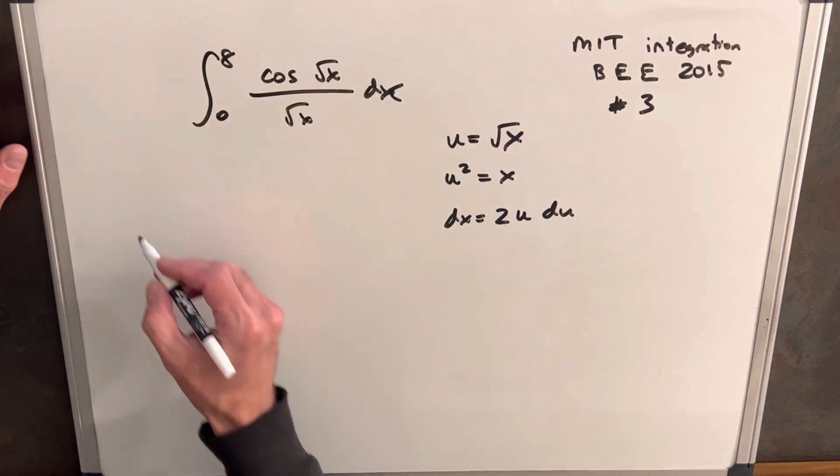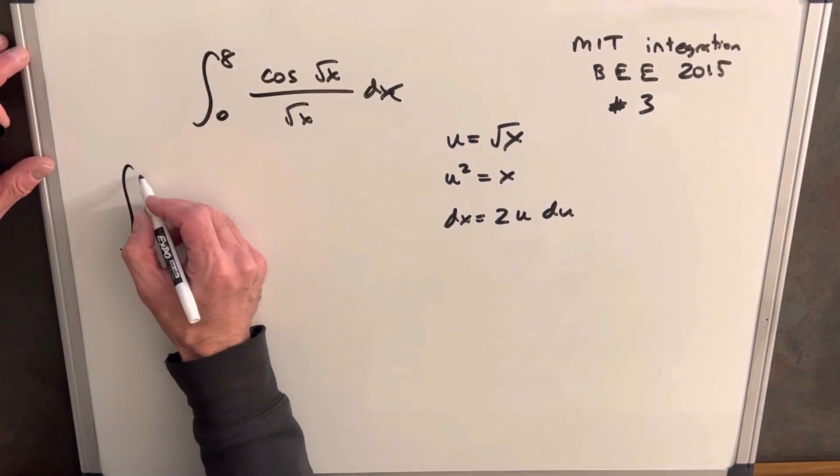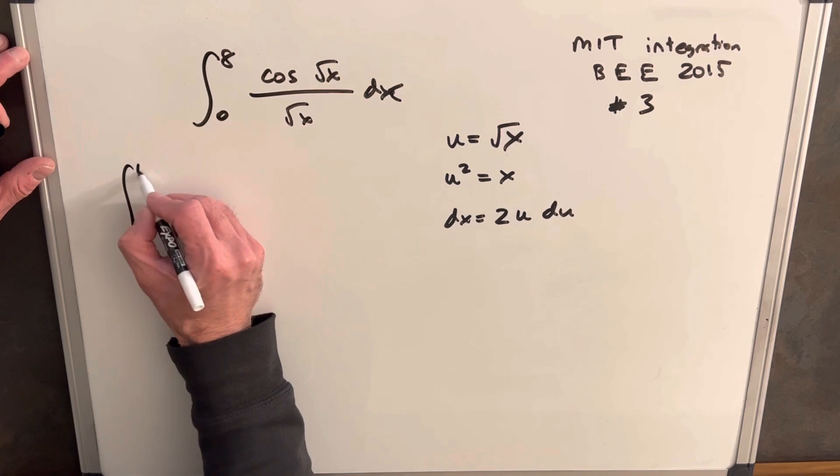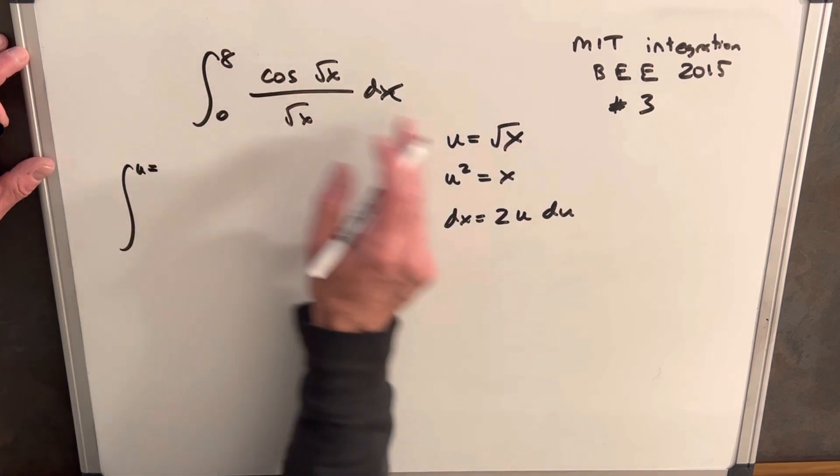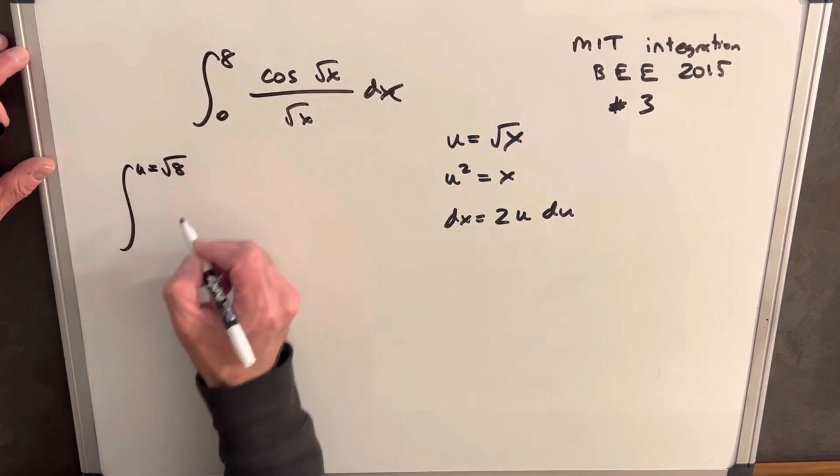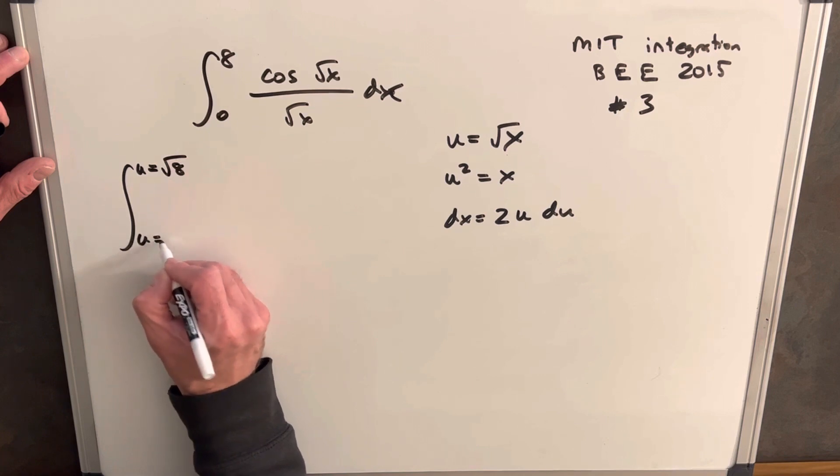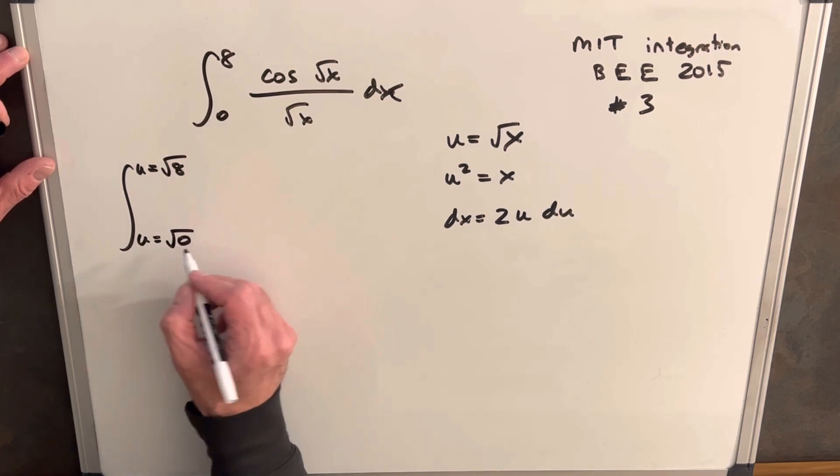Now let's rewrite this and we'll rewrite our limit of integration. So for u, we'll just plug in our value for x here, so this will be square root of 8. And then for our other limit, we're going to plug in 0, square root of 0 is just 0.